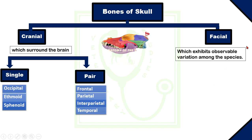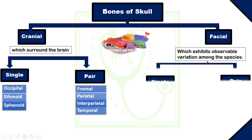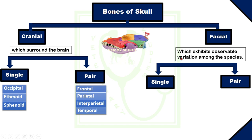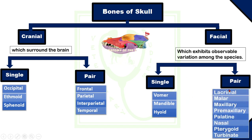Facial bones are the bones which exhibit observable variation among species, meaning they form the face features or expressions of animals. Facial bones consist of single and pair bones. Vomer, mandible, and hyoid bone are single bones, whereas lacrimal, malar, maxillary, premaxillary, palatine, nasal, pterygoid, and turbinate bones are pair bones.